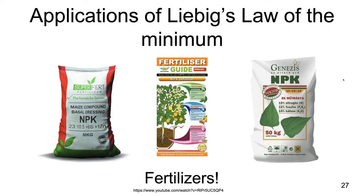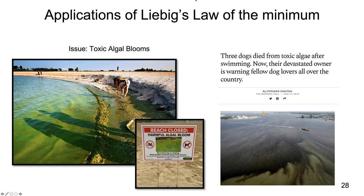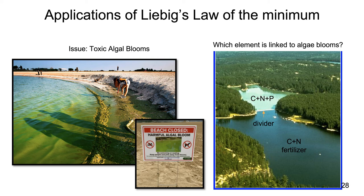Other applications of Liebig's Law include toxic algal blooms — you may have seen photos where there's a bunch of photosynthetic algae growing in a lake or pond, sometimes so bad that no swimming or wading is allowed. You may have even seen articles about dogs dying from toxic algae after swimming because of toxins released by those algae. So why are we seeing so many harmful algal blooms? As it turns out, once again we're looking at nitrogen and phosphorus.